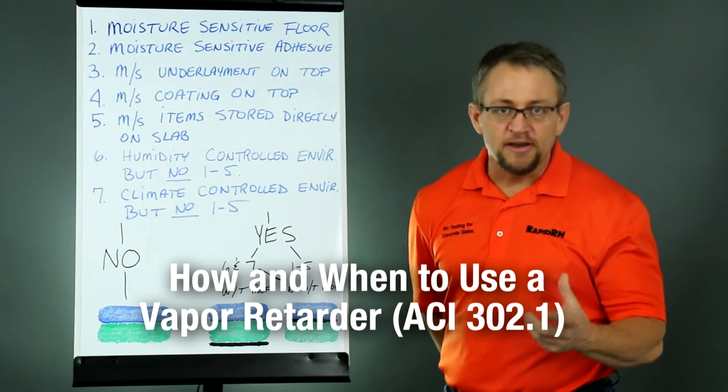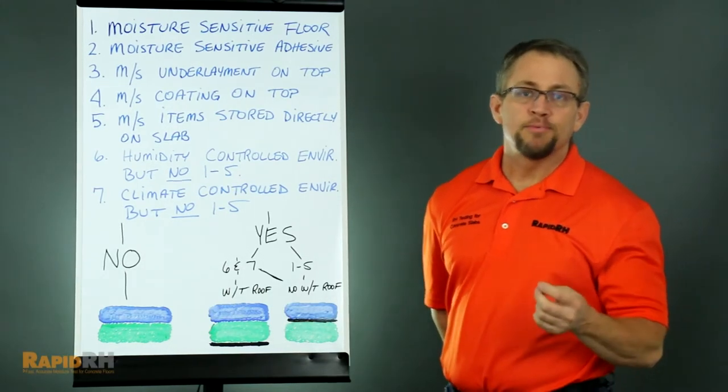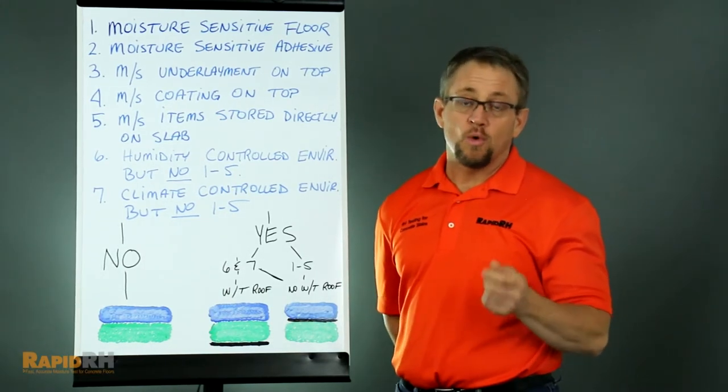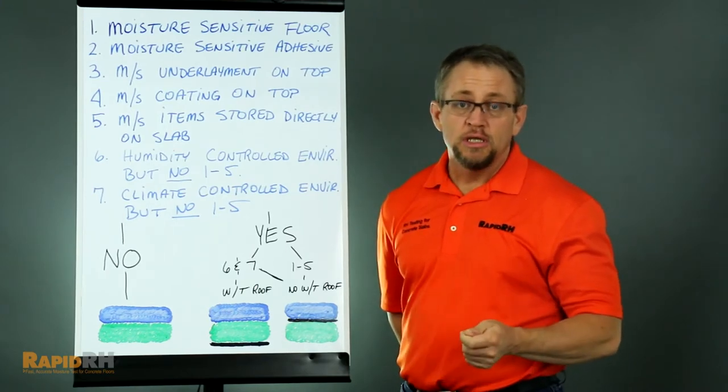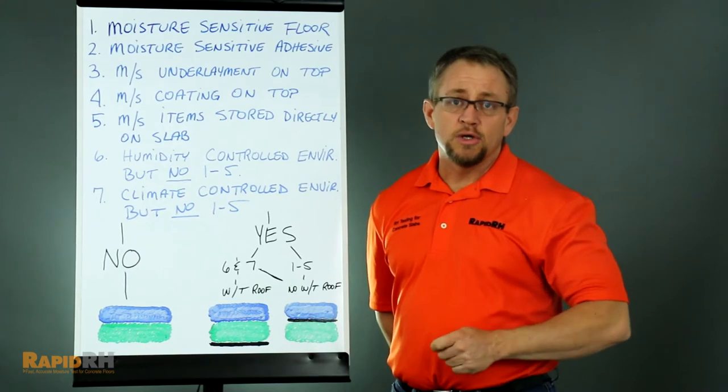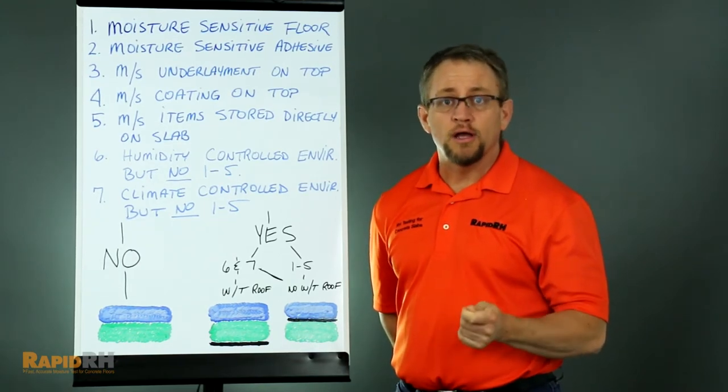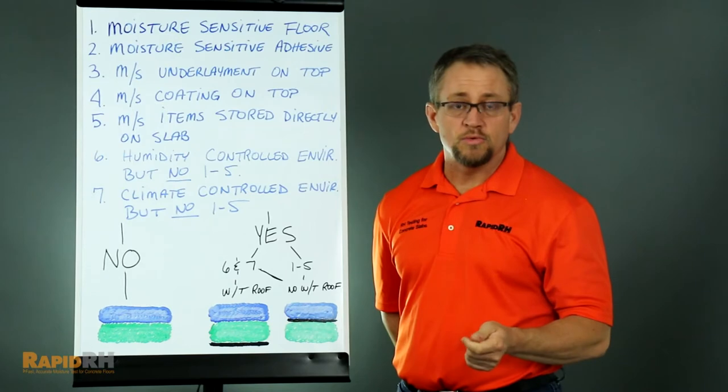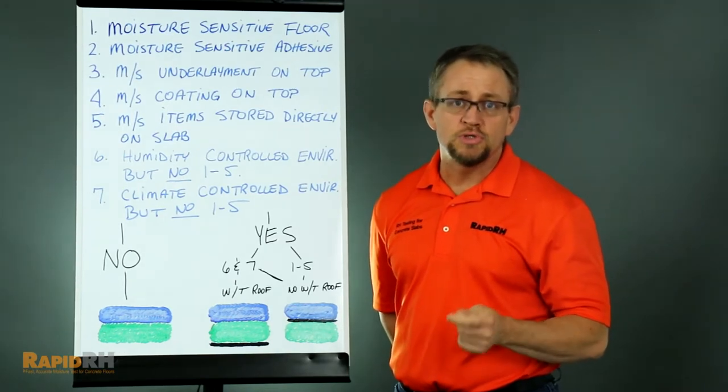With all the different discussions and varying opinions on where vapor retarders should be placed or whether they should even be used in slab construction, we decided it would be a good idea to go over the American Concrete Institute's Guide for Concrete Floors and Slab Construction, which is ACI 302.1.